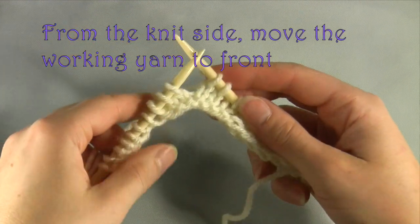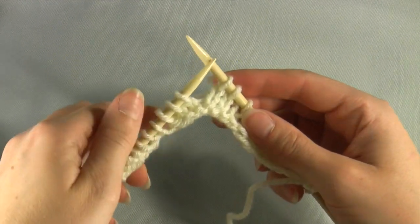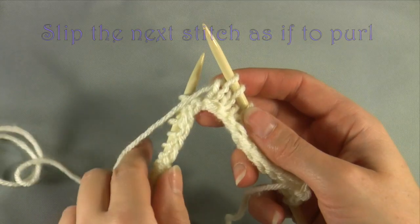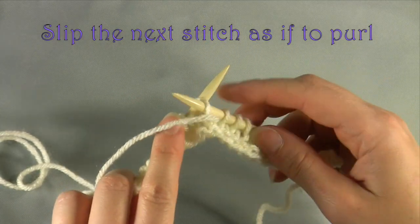With the knit side of the yarn facing you, move the working yarn to the front. Next, slip the next stitch as if to purl.